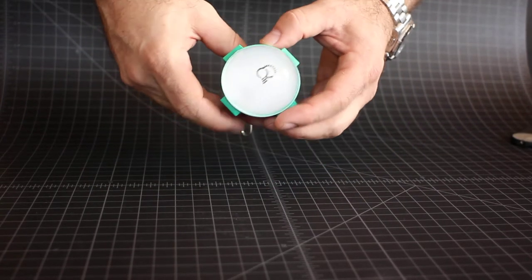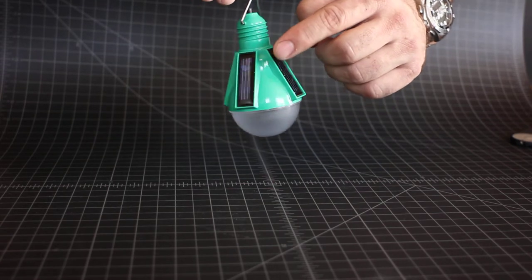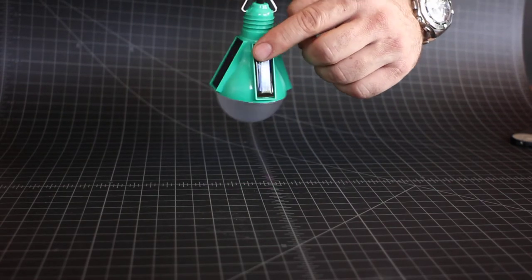This is the Nocaro N100 solar powered light bulb. It's powered by these four solar panels located on the outside of the bulb.